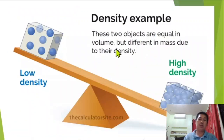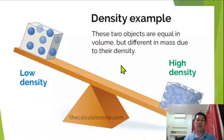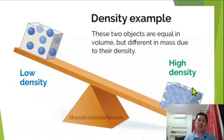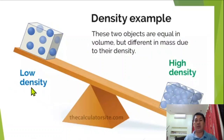These two objects are equal in volume but different in mass due to their density. This one is low density and this one is higher density. The high density object will be at the bottom and the low density object will be on top.